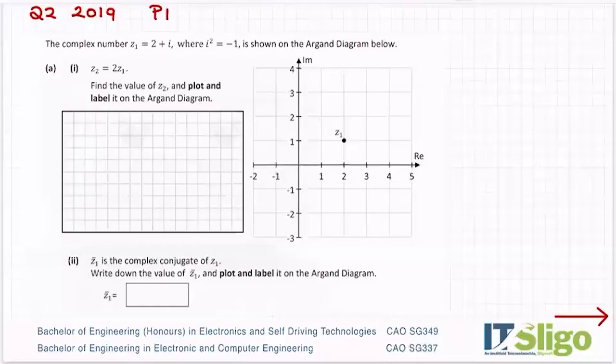Question 2 from 2019 was a complex number question. The complex number Z1 is equal to 2 plus i, where i squared equals negative 1, and it's shown on the Argand diagram. On an Argand diagram in complex numbers, our traditional x-axis is called the real part of the number and the y-axis is the imaginary part. So it's over 2 on the real axis and up to 1i on the imaginary axis, and that's how you plot 2 plus i.